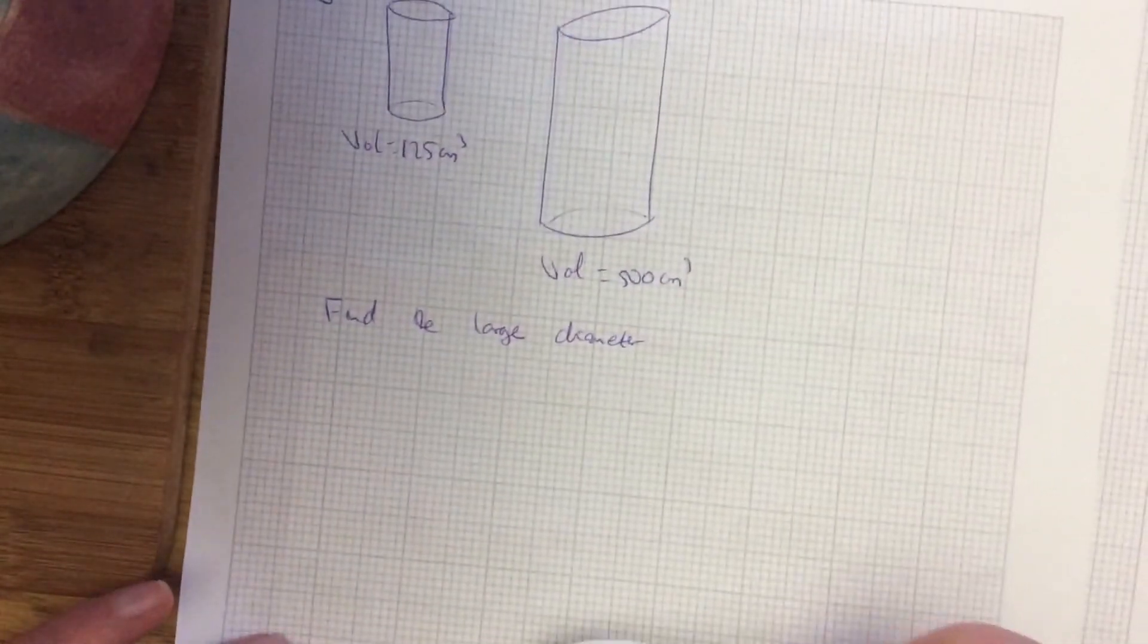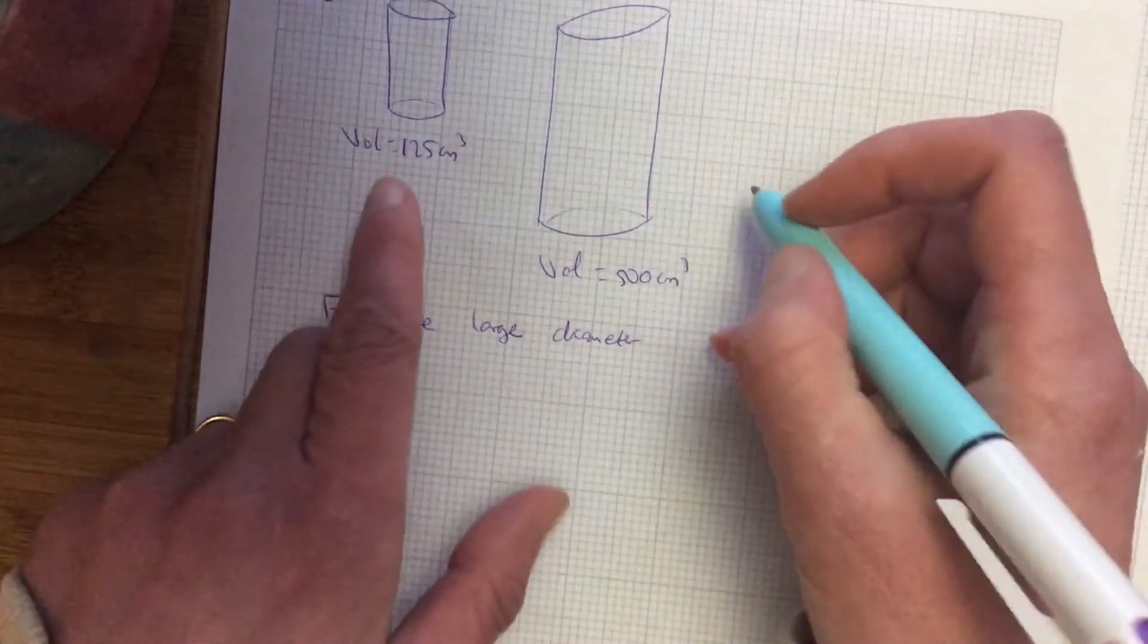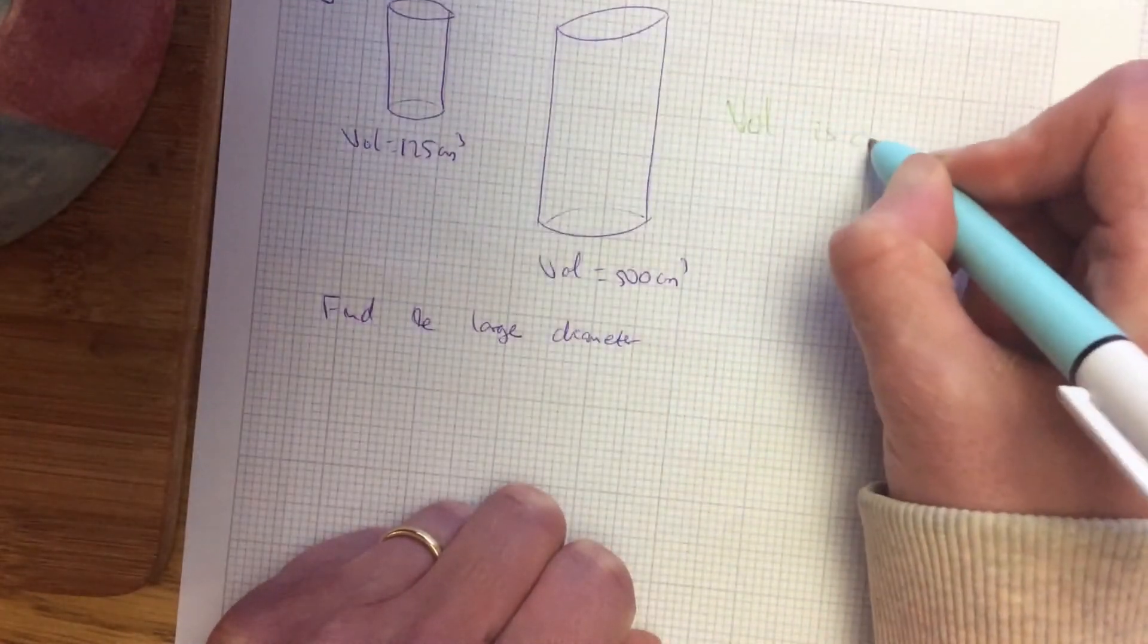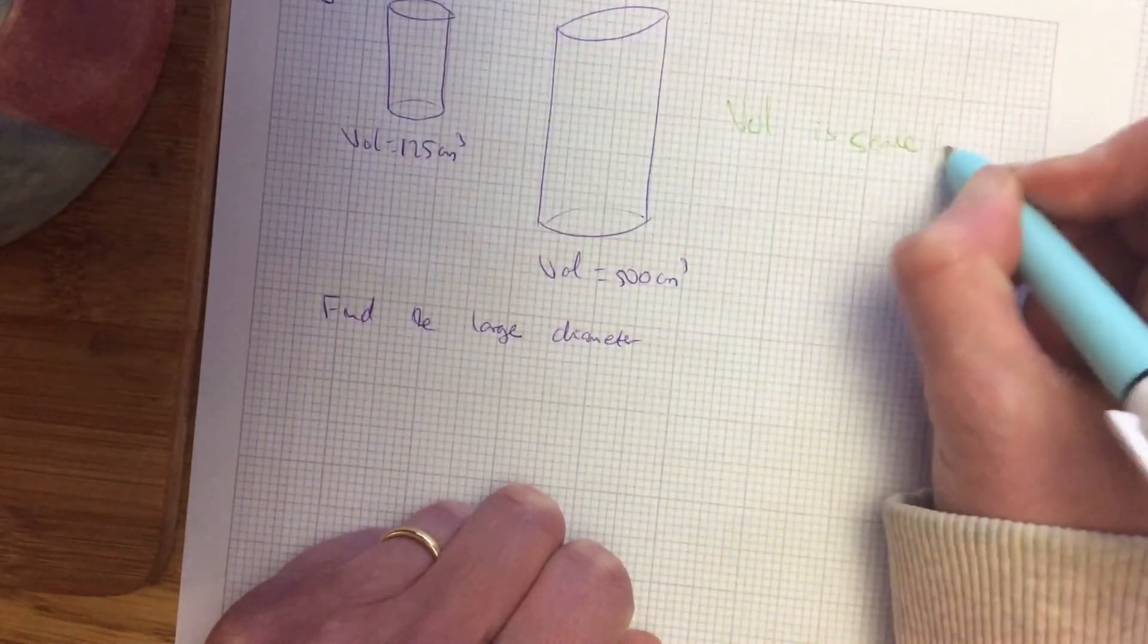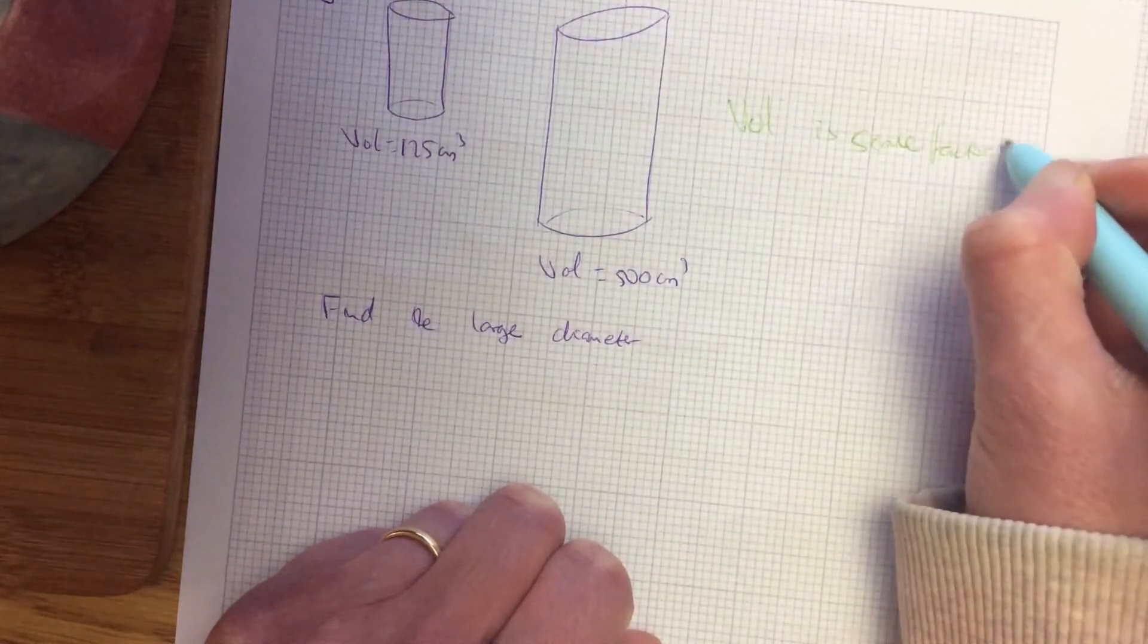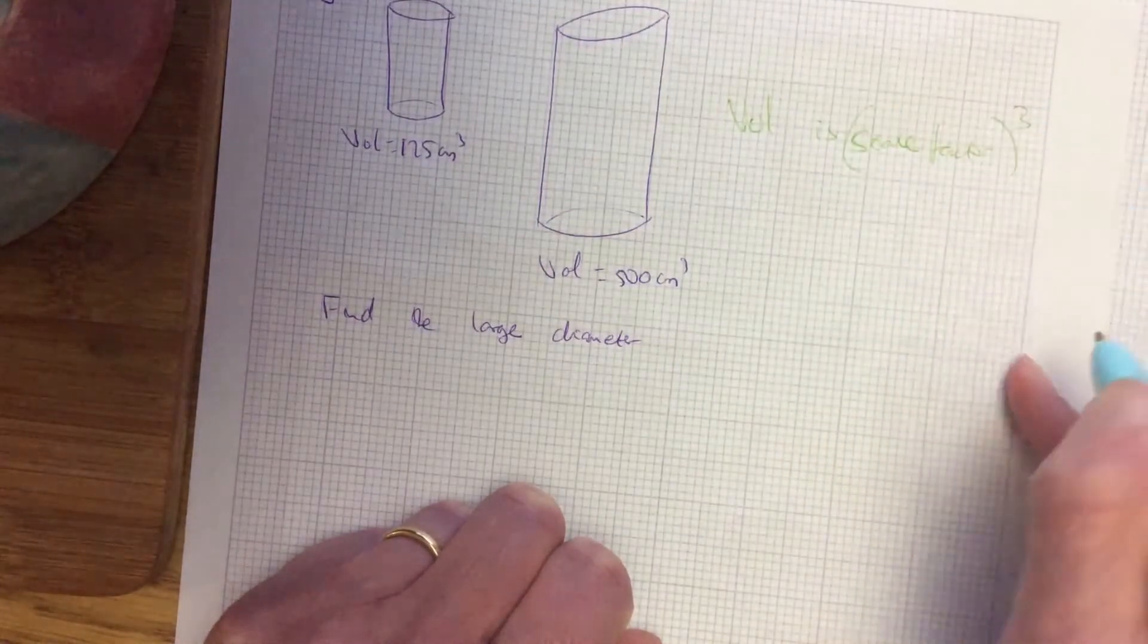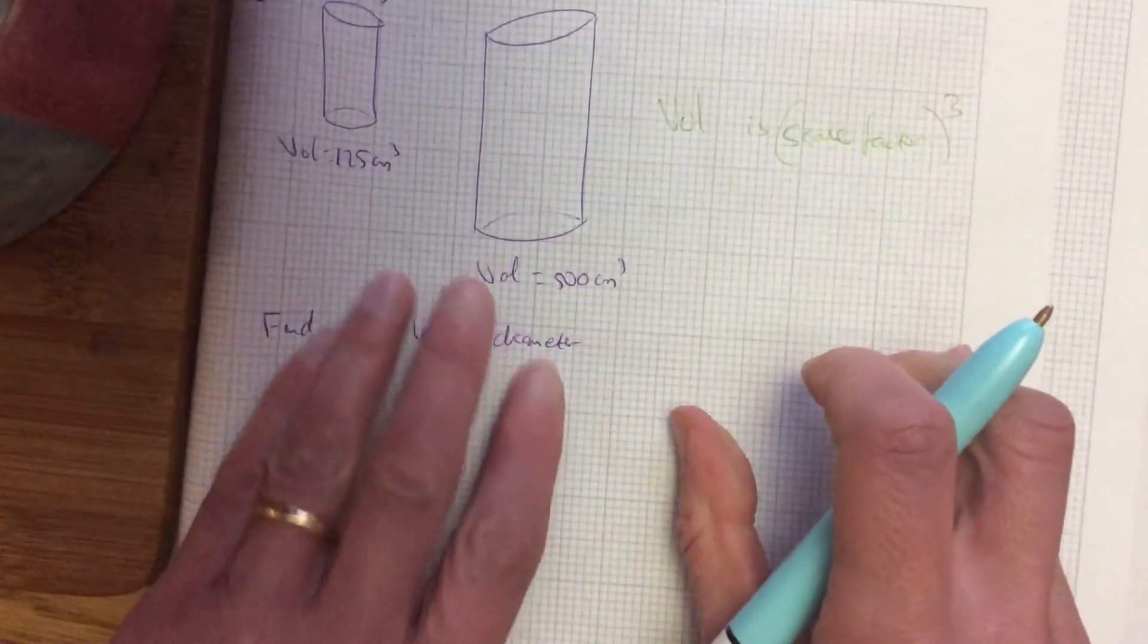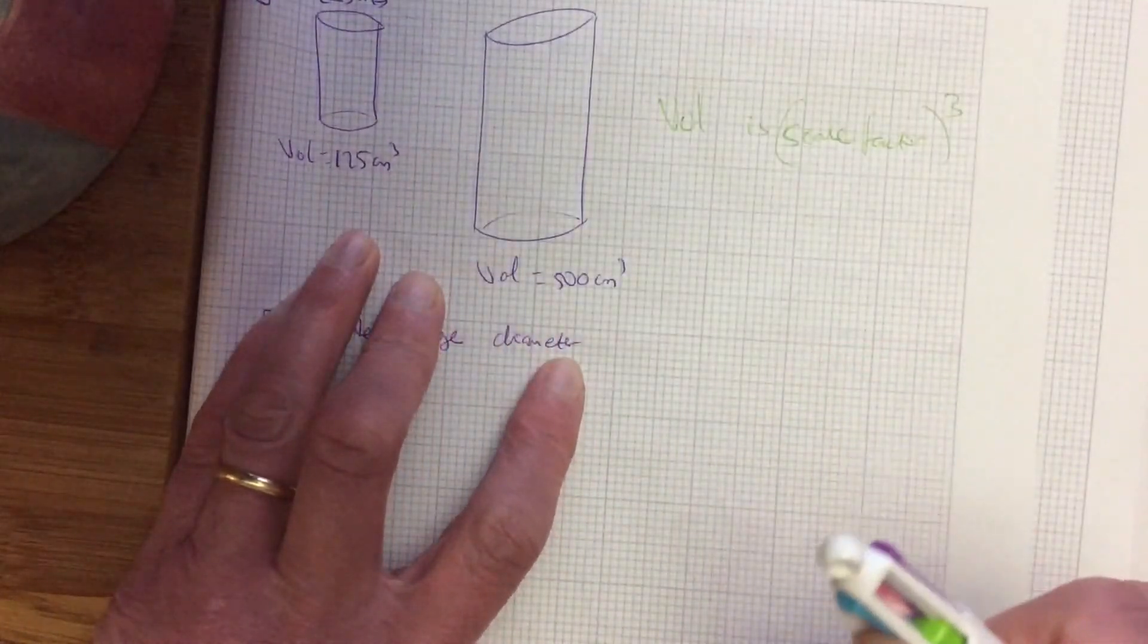Right over the page. I'm sure you can guess what's going to come. Volume. Volume is scale factor cubed.